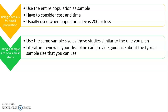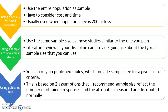Another approach is to use the same sample size as studies already done on the same research topic. You can use the literature review in your discipline, which can provide guidance about typical sample sizes used by other studies. You can also use published tables — various published tables are available based on different authors' formulas — and you should pay attention to the assumptions on which these tables are based.